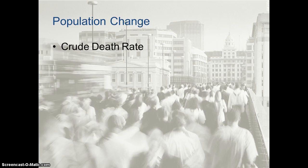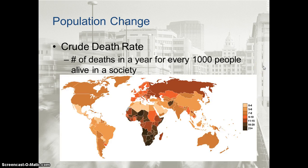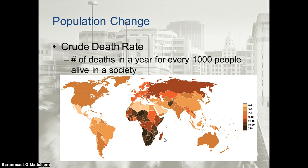The crude death rate (CDR) is the number of deaths in a year for every 1,000 people alive in a society. A 2009 map shows that sub-Saharan Africa had both a very high crude birth rate and a very high crude death rate, meaning their population may be relatively steady. In Europe, you see a similar pattern, and in North America we see a relatively low birth rate but also a relatively low death rate. Crude death rate and crude birth rate are just two indicators that show population change.